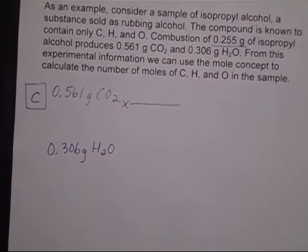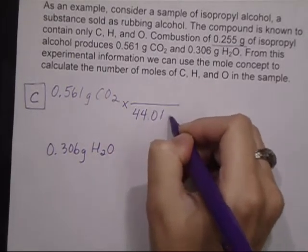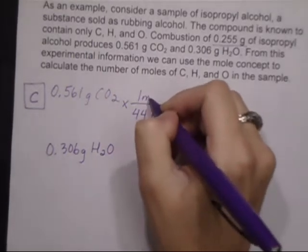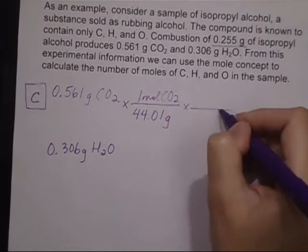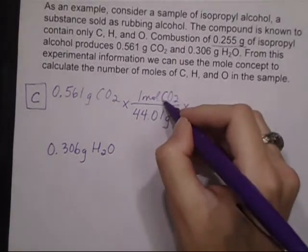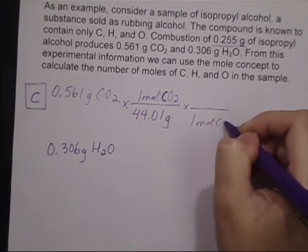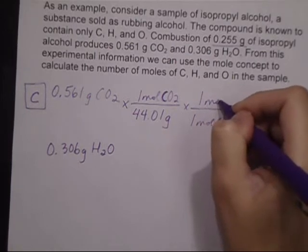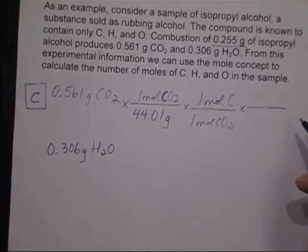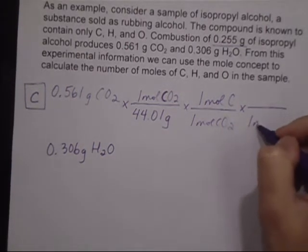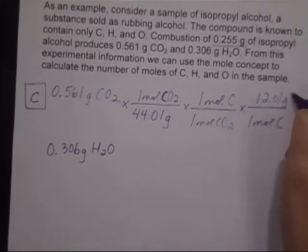So for us to do that, we first have to convert it into moles, and so I'm going to use the molar mass of CO2. And then I care only about the carbon in this compound. So then I have one mole of CO2 contains one mole of carbon. And then because this compound has oxygen in it also, I'm also going to find out the grams of carbon using the molar mass.